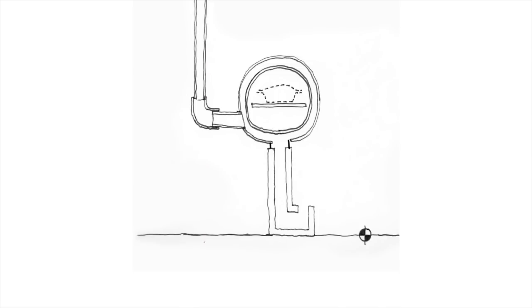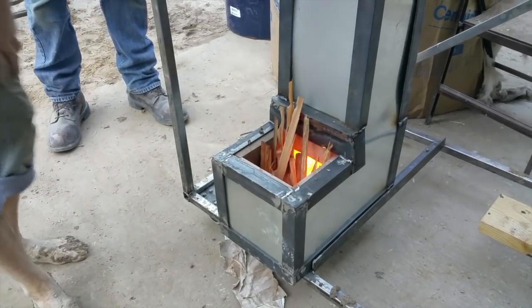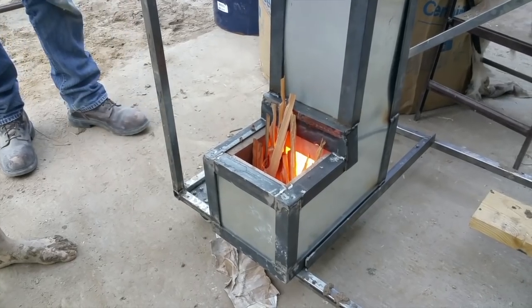To preheat the oven, prime the riser with a bit of fire right under the riser. Then start the full fire with a lot of small sticks, which will burn fast and hot.